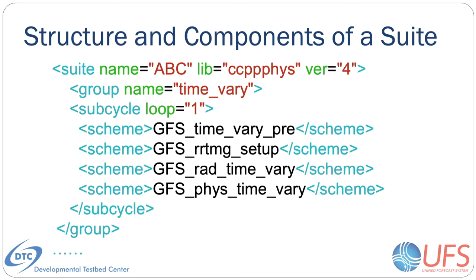Here is one example of a partial SDF file. The name of the suite is an attribute of the suite XML element and is listed at the top of the SDF. It must be consistent with the name of the SDF file itself. For example, the file suite_abc.xml contains suite name equals abc.